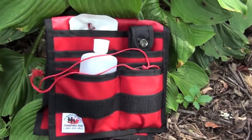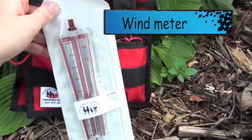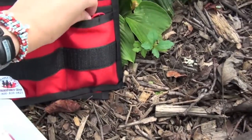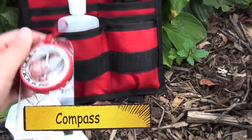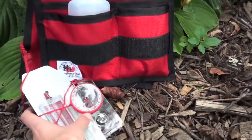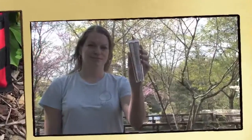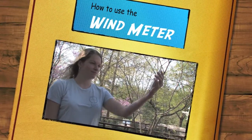To gather this data, we will use a wind meter and compass. These two instruments will allow us to determine the speed and direction at a specific location on the ground. Both instruments require you to face the wind.